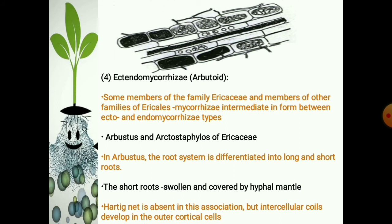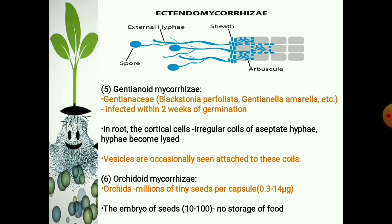The fourth type of mycorrhizae is the ectendomycorrhizae, otherwise called arbutoid. Some members of the Ericaceae have mycorrhizae intermediate in form between ecto- and endomycorrhizae, called ectendomycorrhizae. Arbutus and Arctostaphylos of the Ericaceae show this type of association. In Arbutus, the root system is differentiated into long and short roots; the short roots are swollen and covered by a hyphal mantle. The Hartig net is absent in this association, but intracellular coils develop in the outer cortical cells. Nothing is known about the fungi involved in this association. This picture shows the ectendomycorrhizae association with the plant.